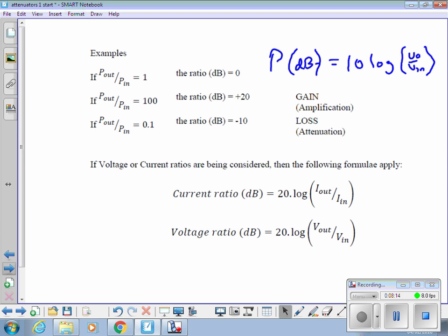If P_out is less than P_in, i.e. if P_out over P_in is 0.1, a number less than one, you'll get a negative value of gain. Negative gain is attenuation.